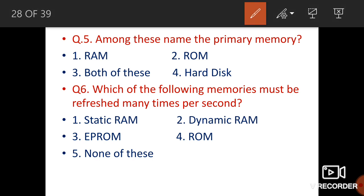Among these, name the primary memory. Primary memory is also known as main memory. Without primary memory, a computer cannot run at all. Secondary memory — like a CD or pendrive — can be removed and the computer still works, but without primary memory it is impossible. Both RAM and ROM are primary memory.